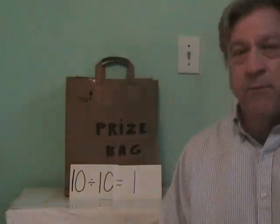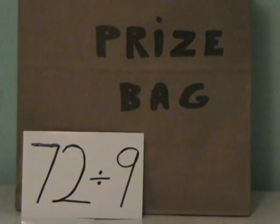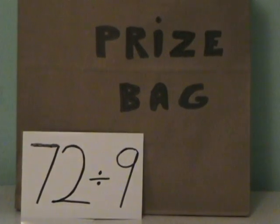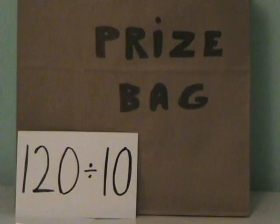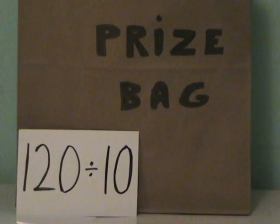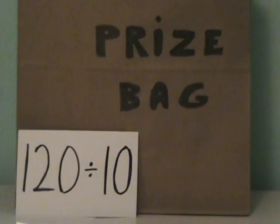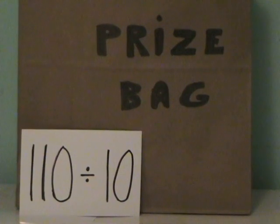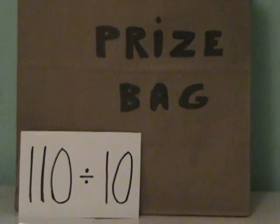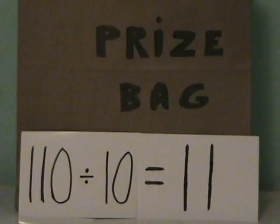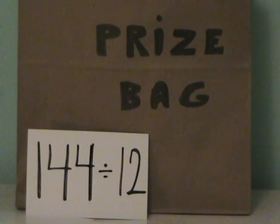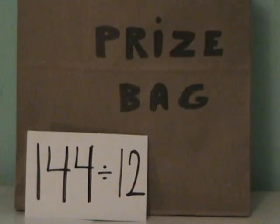Let's continue with our division — we only have a few more to go. Pay attention, stay with it, do your division. 72 divided by 9 is 8. 120 divided by 10 — that's right — 120 divided by 10 is 12. 110 divided by 10 — that's right — 110 divided by 10 is 11. 144 divided by 12 is 12.